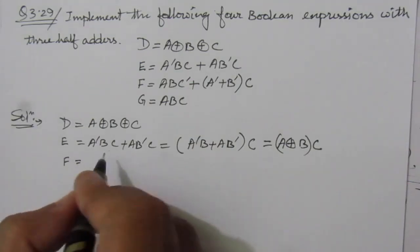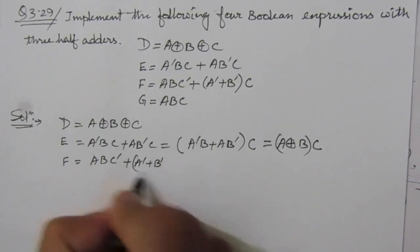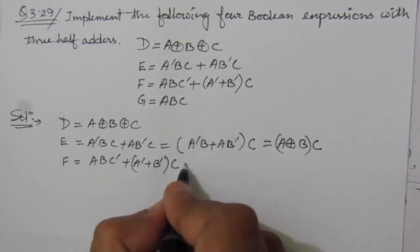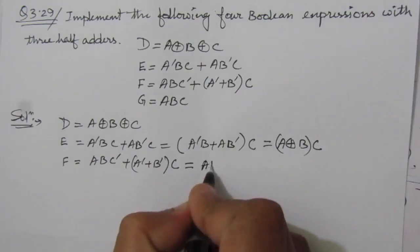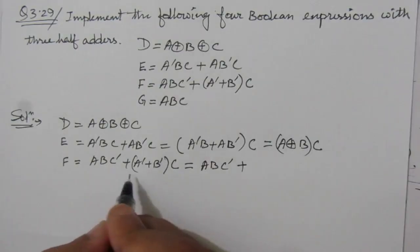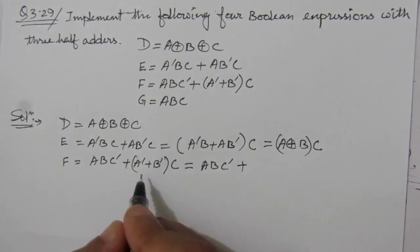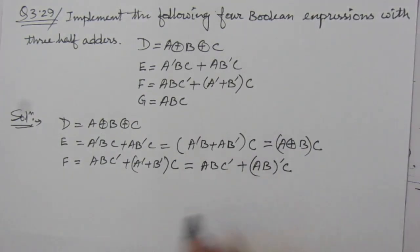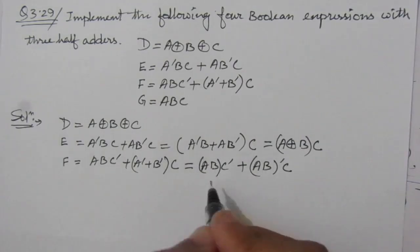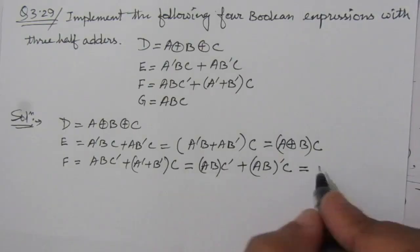Now we have F. F = ABC' + (A' + B')·C. We have to simplify this to implement with a half adder circuit. Here, A' + B' is the expansion of (AB)' using De Morgan's theorem — if we expand AB whole bar using De Morgan's theorem, we get A'B'. So we can write it as ABC' + (AB)'·C. This term A'B + AB' is the XOR expression, so F simplifies to AB XOR C.